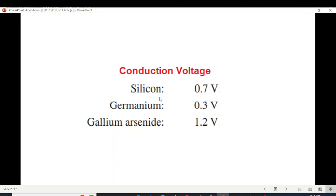We have already learned that the silicon diode requires 0.7 volt to turn it on, germanium 0.3, and gallium arsenide requires 1.2 volt.